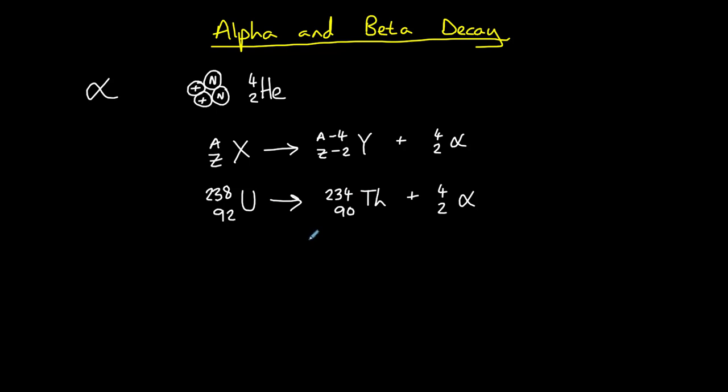Note that we can check that this decay equation is correct by comparing the nucleon number and the proton number to the left and right of the arrow. So on the left we have a nucleon number of 238, and 234 plus 4 on the right, so it's balanced. On the left we have a proton number of 92, on the right we have proton numbers of 90 and 2, so again it is balanced.